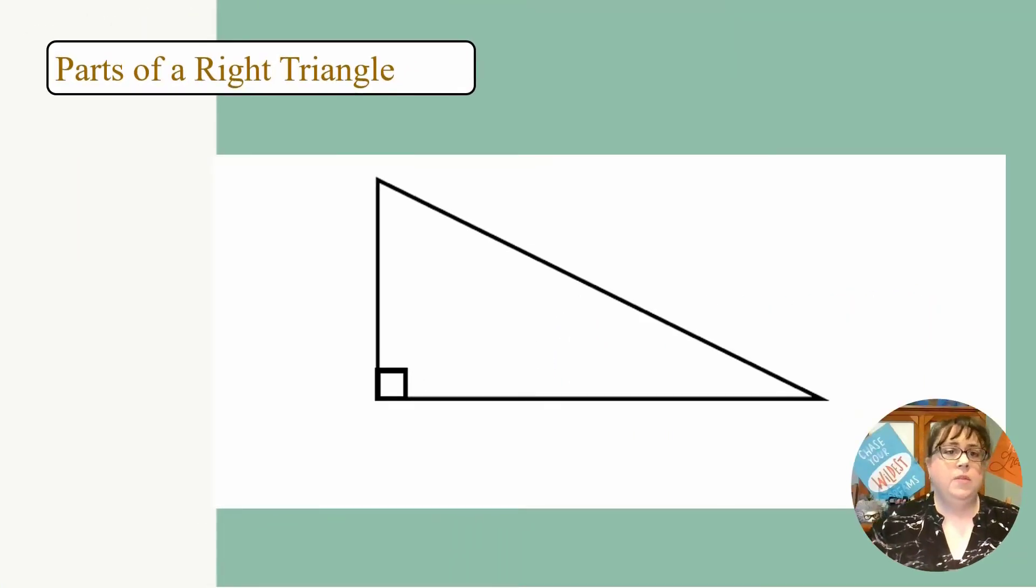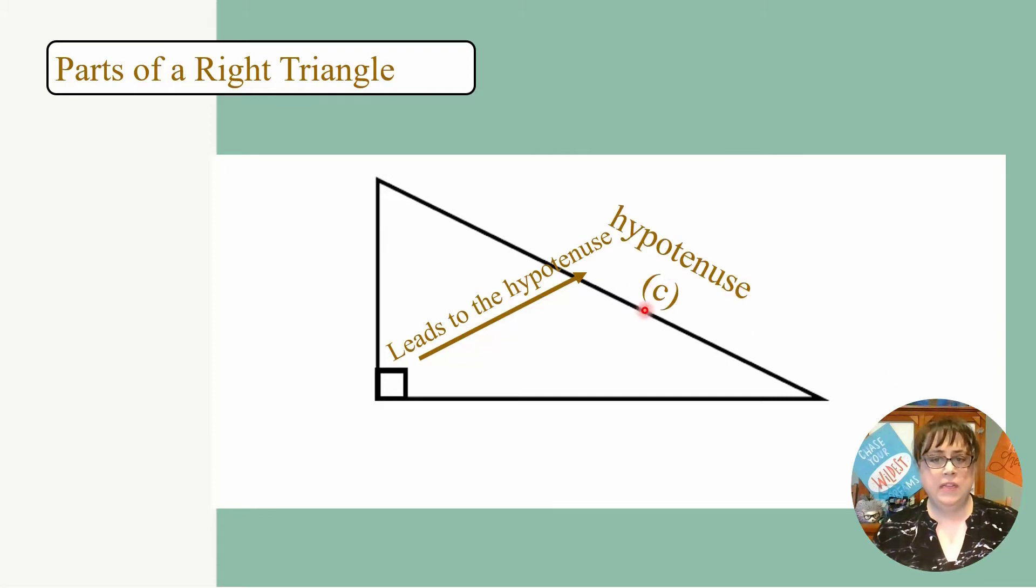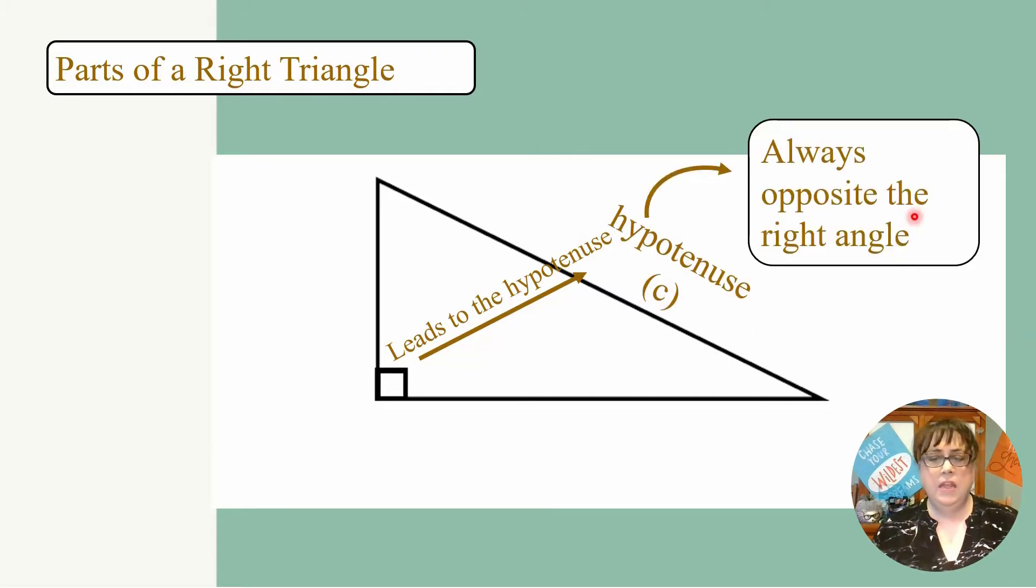Let's begin by labeling parts of a right triangle. The right angle of the right triangle is going to lead us directly to the hypotenuse, which is the side opposite of the right angle. The hypotenuse, we are going to label as C. Remember, it's always opposite of the right angle.